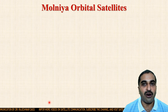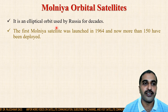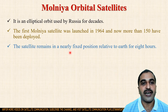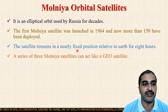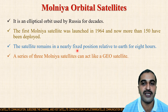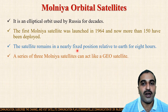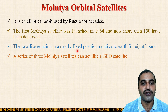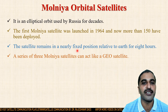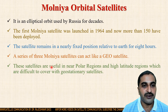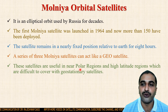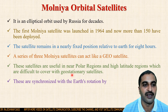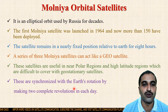Next is the Molniya orbital satellite. It is an elliptical orbit used by Russia for decades. The first Molniya satellite was launched in 1964 and more than 150 have been deployed. The satellites remain in nearly fixed position relative to earth for 8 hours. A series of 3 Molniya satellites can act like one GEO satellite, and since 3 GEO satellites are sufficient to cover the entire earth, 3×3 = 9 Molniya satellites are sufficient to cover the entire earth. These satellites are useful in near-polar regions and high-latitude regions, which are difficult to cover with geostationary satellites.